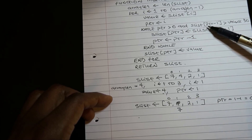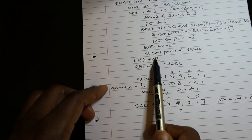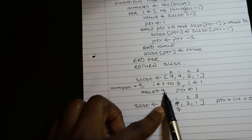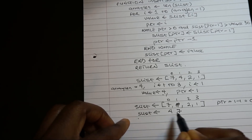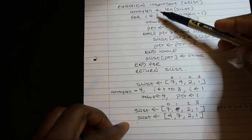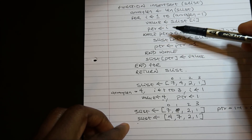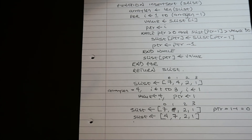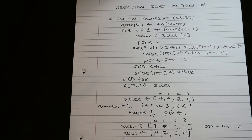Since that condition is false, we come out of the while loop. We go to sList[pointer], which is sList[0], and put in the value we have stored — four. So the new structure of sList becomes four, seven, two, one. We go back to the for loop and i becomes two, meaning we look at the next value and repeat the process. I hope this has been helpful in explaining how the insertion sort algorithm works. Goodbye.